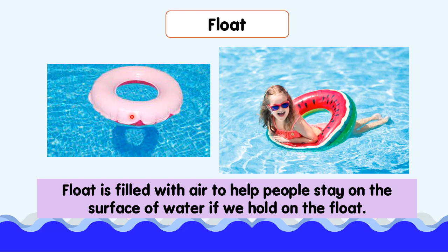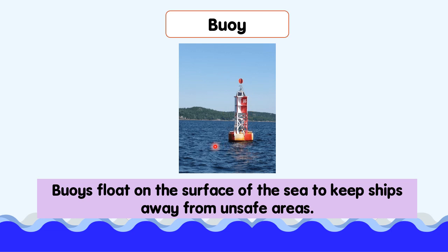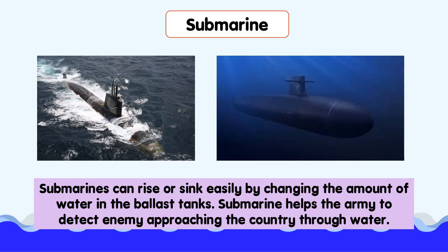Buoys are filled with air to help people stay on the surface of water if they hold on to them. Buoys float on the surface of the sea to keep ships away from unsafe areas. Submarines can rise or sink easily by changing the amount of water in the ballast tanks. Submarines help the army to detect enemies approaching the country through water.